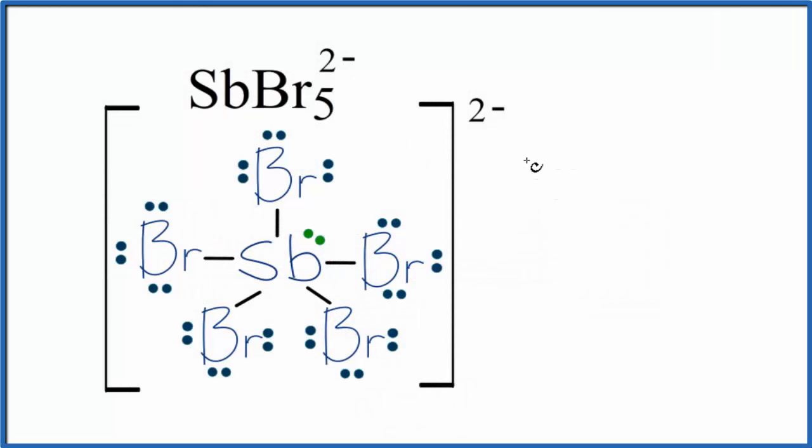We could also use the AXE notation to figure out the molecular geometry here for SbBr5 2-. A, that's the central atom. X, that's the number of atoms bonded to it. We have those 5 bromines. And E, that's the number of lone pairs. We have the one lone pair here. And that gives us a 1. AX5E1, if you look that up, that's square pyramidal.